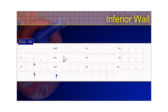You could go further and see ST depression in some of these anteroseptal leads, which is indicative of a posterior wall infarction because this is a dominant RCA occlusion. The inferior wall is infarcted while not much of the lateral wall is involved, and you have a posterior descending artery pattern — so it's probably not a left circumflex occlusion but most likely a dominant RCA occlusion.